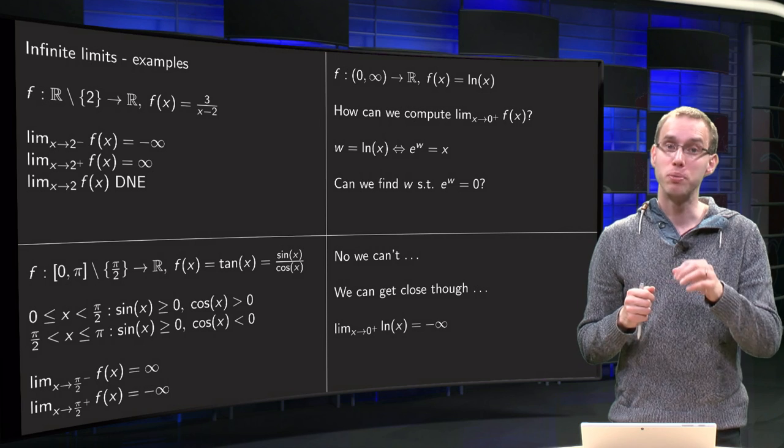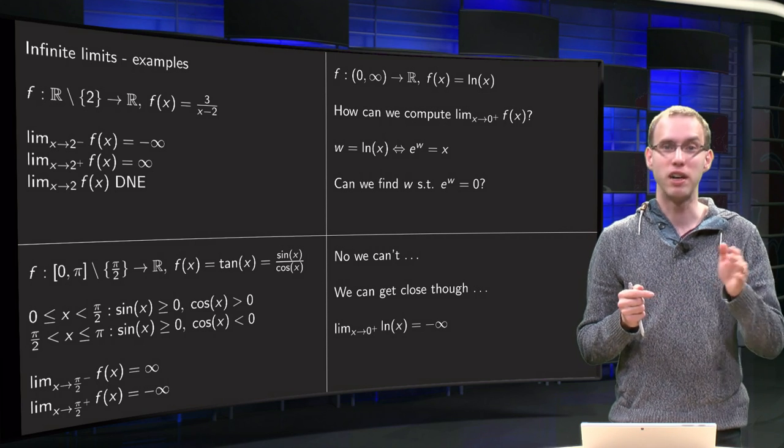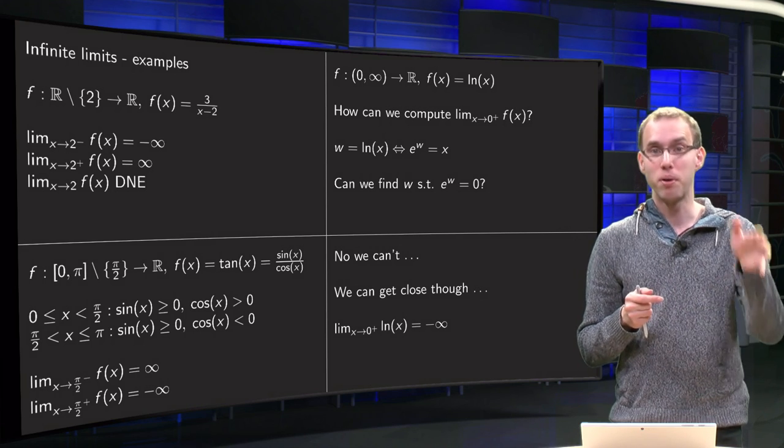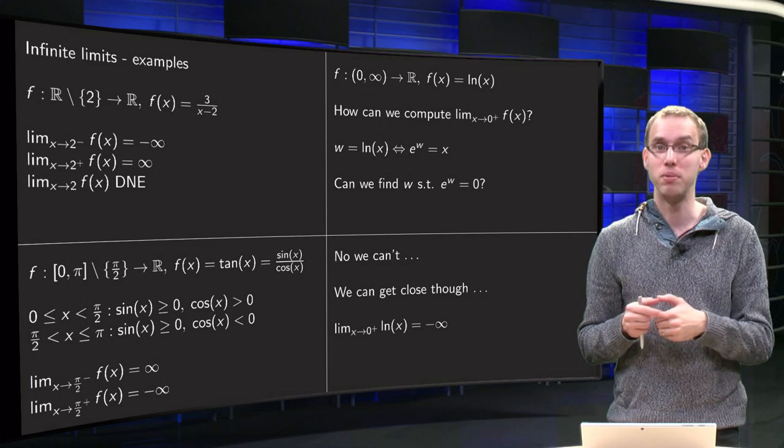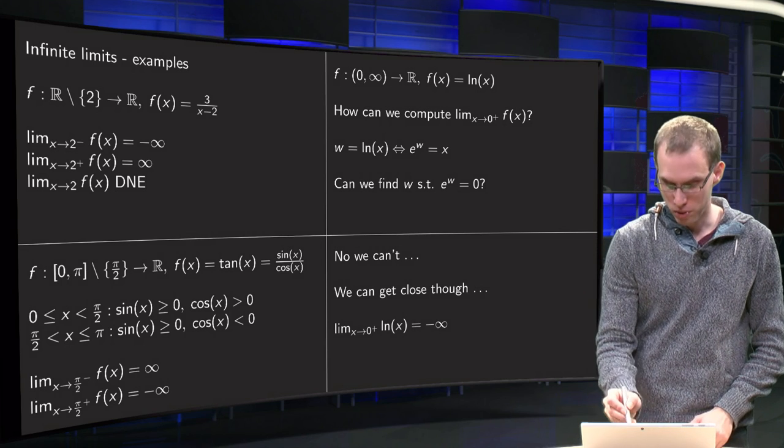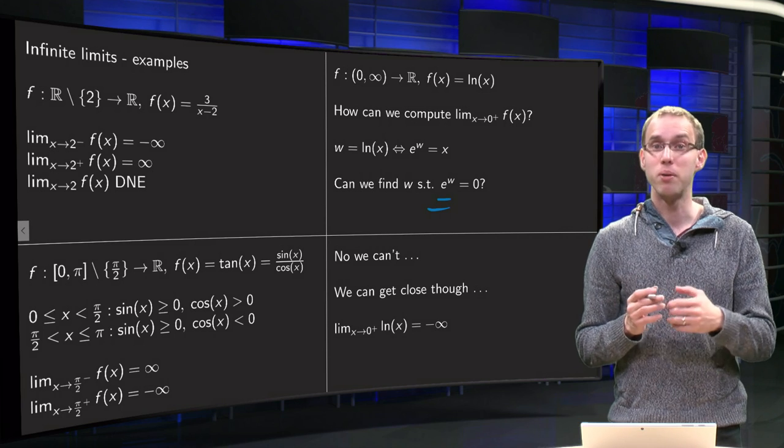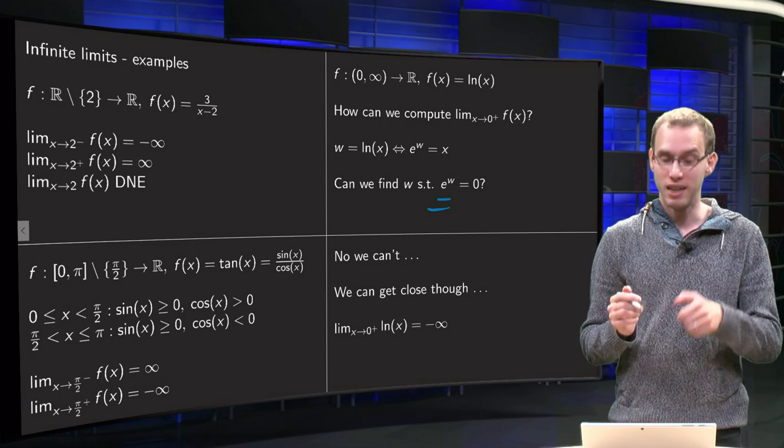if we take w to be very very negative, like minus thousand, minus a million, so because then e to the power w equals e to the power minus thousand, e to the power minus a million, so then this quantity over here will become very small. So we can get arbitrarily close to 0 by taking w arbitrarily negative,